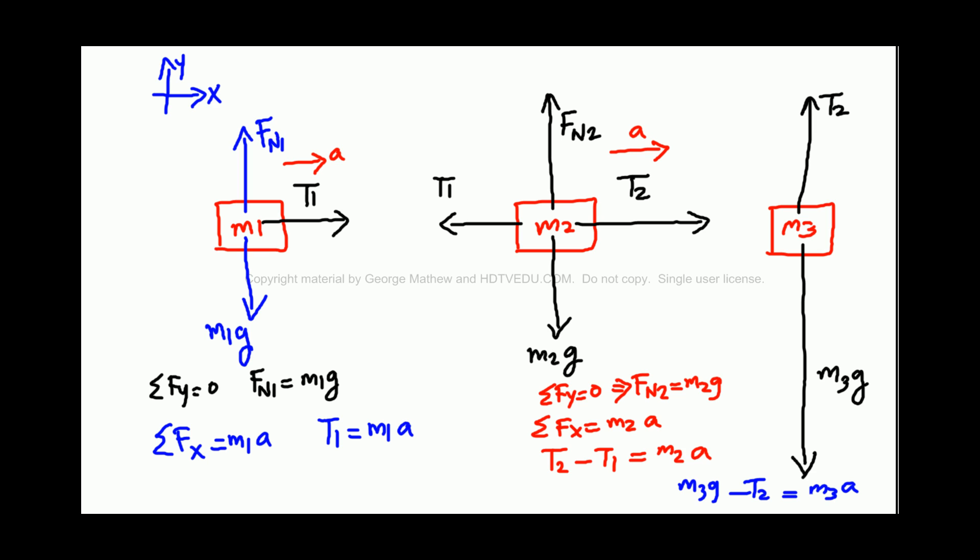We have all these equations. Let's put it on another page. So for the first mass, we have T1 equals M1a. For the second mass, we have T2 to the right minus T1 to the left equals, there is no friction, it goes M2a. For the last mass, we have M3g minus T2 equals M3a.